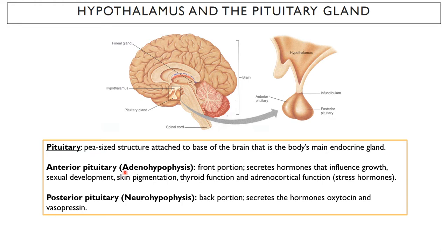The anterior pituitary is also known as the adenohypophysis, and this front portion secretes hormones that influence growth, sexual development, skin pigmentation, thyroid function, and adrenocortical function — which essentially refers to stress hormones. The posterior pituitary is referred to as the neurohypophysis. It secretes the hormones oxytocin and vasopressin, which are related to milk letdown, birthing, sexual affiliative behavior, and social structure.